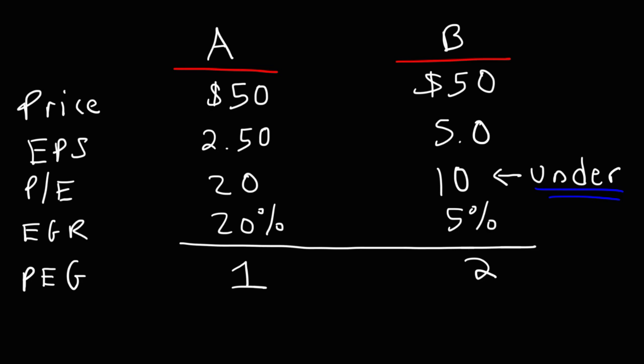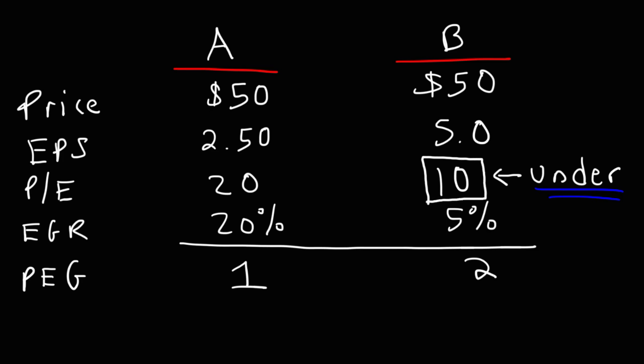Like the PE ratio, a low PEG ratio indicates the stock is undervalued, whereas a high PEG ratio indicates the stock is overvalued. The key difference between the PEG ratio and the PE ratio is that the PEG ratio takes the earnings growth rate into account. As we can see in this example, the PE ratio doesn't give us the whole picture. The PE ratio tells us that Company B is undervalued with respect to Company A, but the PEG ratio tells us that Company A is undervalued with respect to Company B.